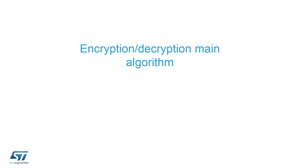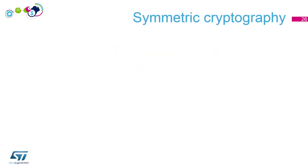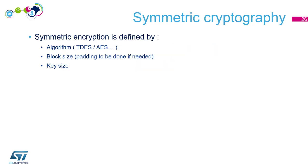Encryption and decryption mean algorithm. Let's start with symmetric cryptography again. An encryption is defined by three things: algorithm, block size, and key size.